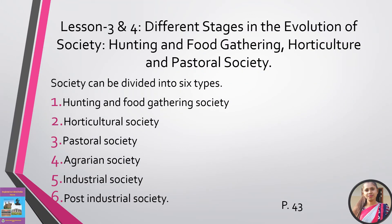Lessons 3 and 4: Different stages in the evolution of society — hunting and food gathering, horticultural, and pastoral society. Society can be divided into 6 types: hunting and food gathering society, horticultural society, pastoral society, agrarian society, industrial society, and post-industrial society.